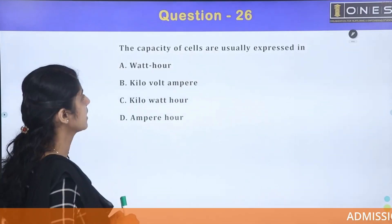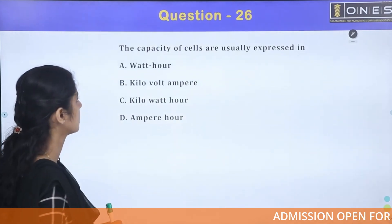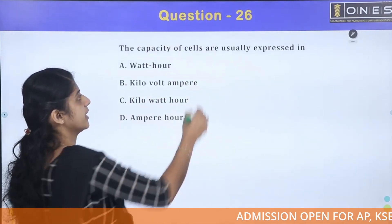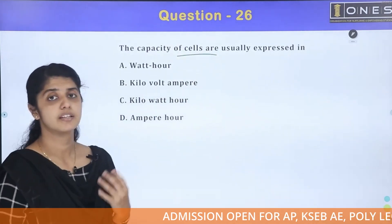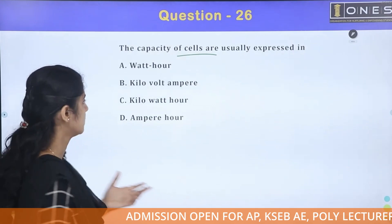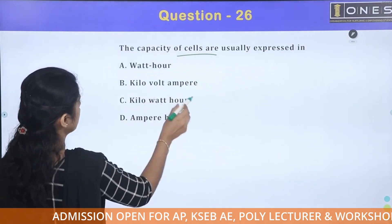The capacity of cells is usually expressed in certain units. Cellular battery capacity is expressed in specific units. A simple question is: what is a watt hour?